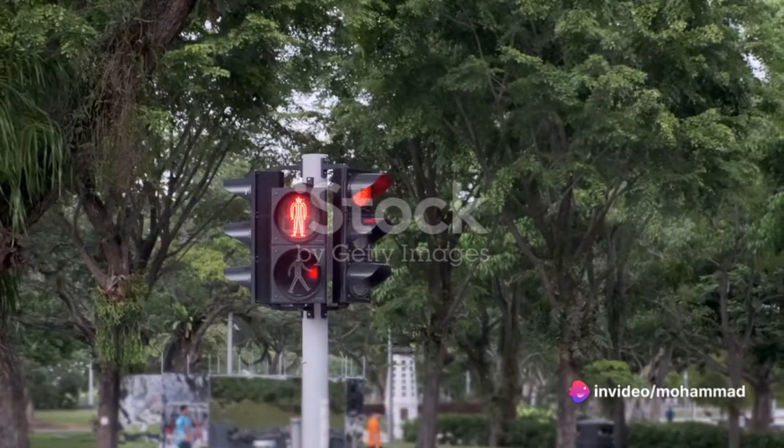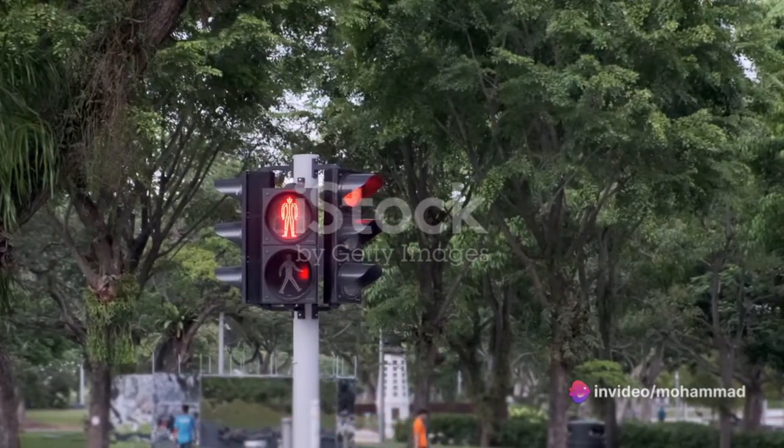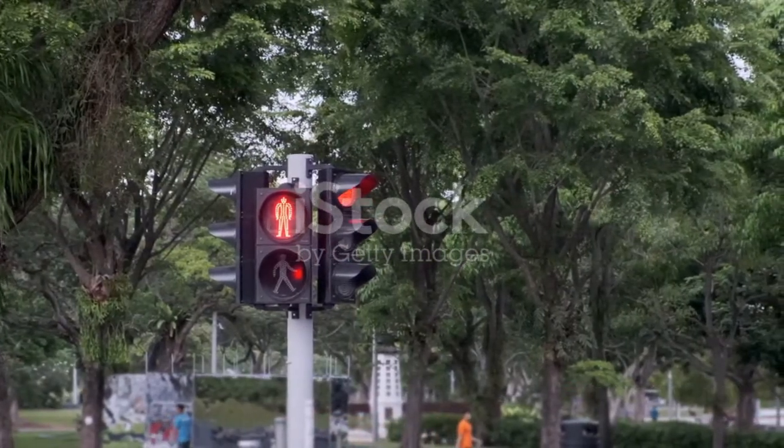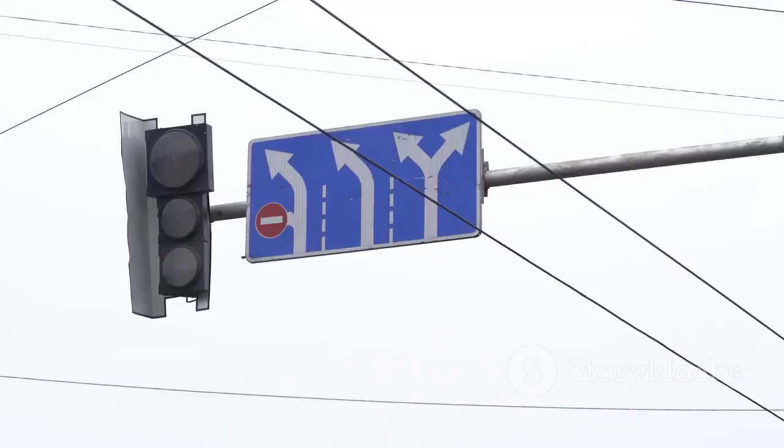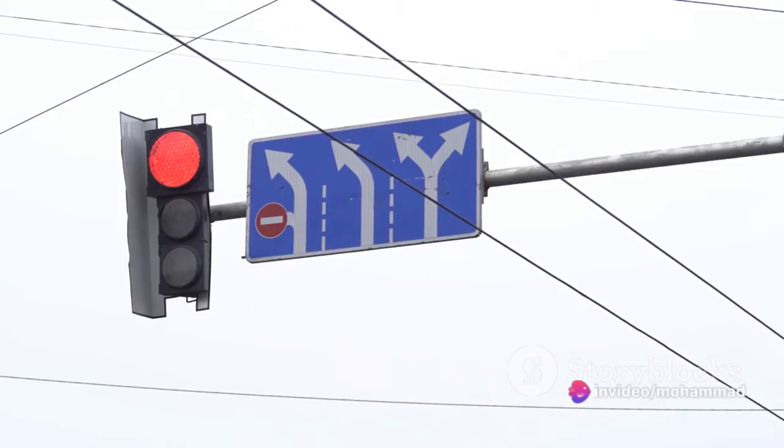To illustrate the proportional component, let's consider a simple example. Imagine you are driving a car and trying to maintain a constant speed. The speedometer indicates that you are currently going 60 mph, but the desired speed is 50 mph. The error in this case is 10 mph.